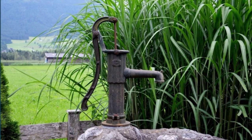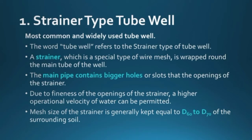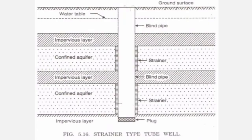Usually we install pumping instruments or apparatus for pumping out water, which can be attached with a motor or any other pumping device. Types of tube wells are: strainer well, cavity well, and slotted well. The strainer type tube well is the most common and widely used type — in common practice, tube well or bore well refers to a strainer type tube well. A strainer or mesh is wrapped around the main tube of the well, which is inserted into the ground. The central one is the main pipe, and the mesh wrapped around it in confirmed aquifer zones is called the strainer or wire mesh.